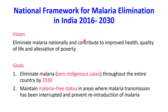The National Framework for Malaria Elimination in India 2016-2030: the vision is to eliminate malaria nationally and contribute to improved health, quality of life, and alleviation of poverty. The goal is to eliminate malaria — that is, zero indigenous cases throughout the country by 2030 — and to maintain malaria-free status in areas where malaria transmission has been interrupted and prevent reintroduction of malaria in those areas.